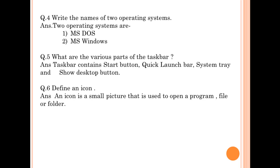Question number 5: What are the various parts of the taskbar? Answer: Taskbar contains the Start button, Quick launch bar, System tray, and Show desktop buttons.